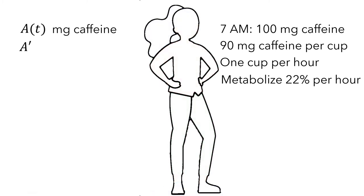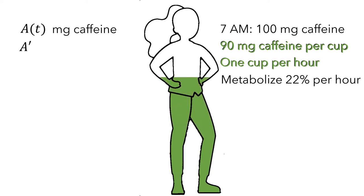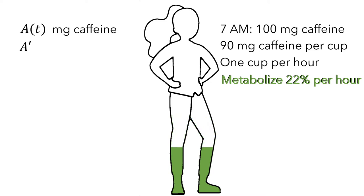Let's represent the amount of caffeine in Aleema's body with the color green. So Aleema starts her day with 100mg in her body. Throughout the day, she adds 90mg per hour at a constant rate, and she metabolizes 22% of the caffeine per hour. This means when there is a lot of caffeine in her body, 22% is a large amount, so the caffeine is metabolized quickly. When there is less caffeine in her body, 22% is a smaller amount, so it is metabolized slowly.